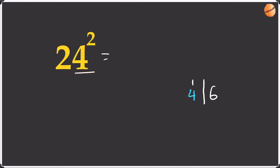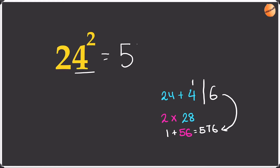Now we add the difference to the original number: 24 plus 4 is 28. Keep the remainder — don't add it yet. Then times by the tens place: 2 times 28 is 56. Now add the remainder: 56 plus 1 is 57. Bring the 6 over, and the answer is 576.